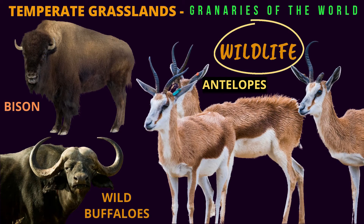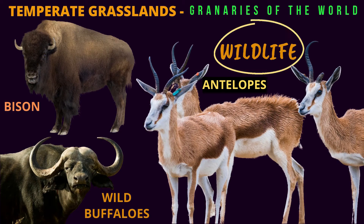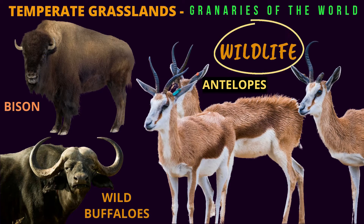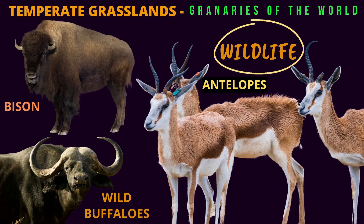What kind of animals can we find in the temperate grasslands? Bison, wild buffalos, and antelopes are the animals that you can find in the temperate grasslands.